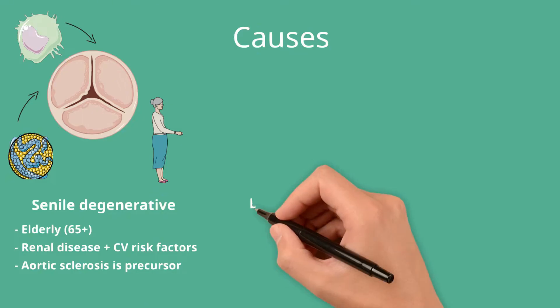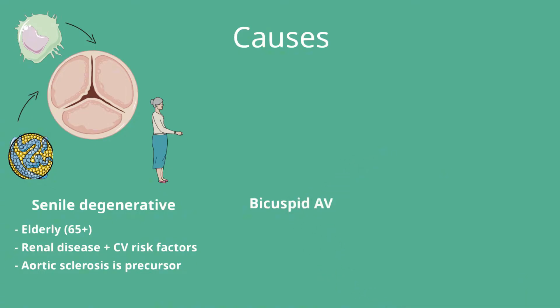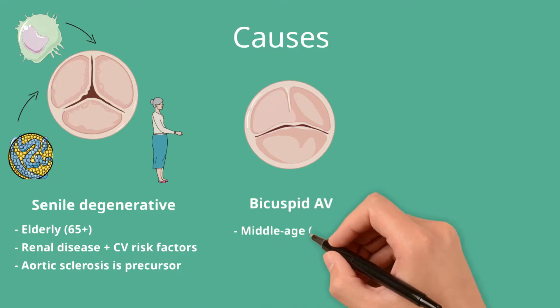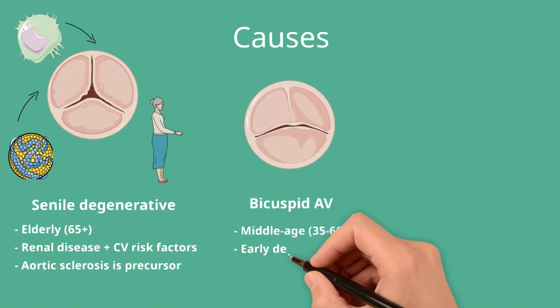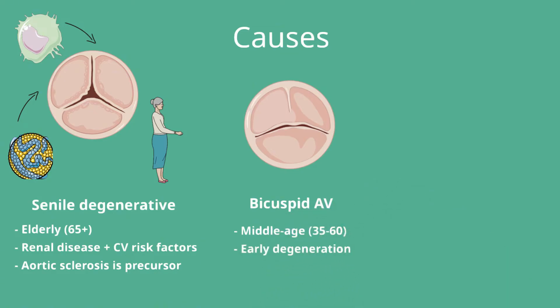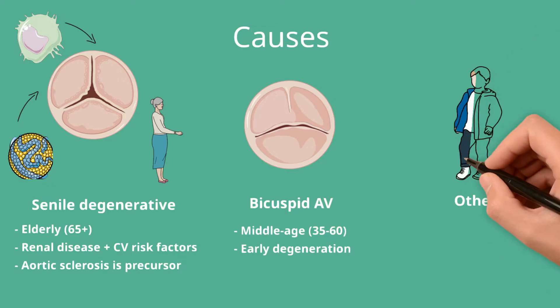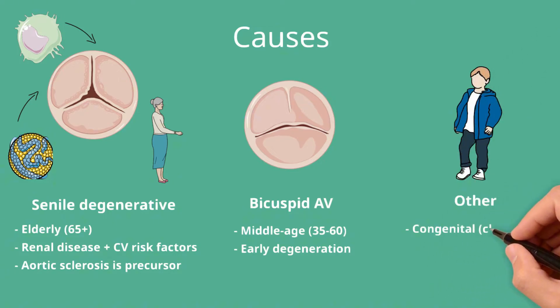The second most common cause is due to the premature degeneration of a bicuspid aortic valve. Around 1% of the population are born with such a valve that either has two leaflets or one where two of the three leaflets are fused together, a so-called functionally bicuspid valve. These usually function well and are asymptomatic until middle age, when they frequently degenerate and cause aortic valve disease. Other causes include congenital aortic stenosis, where the valve is stenosed from birth, and rheumatic heart disease, which is now very rare in the Western world.